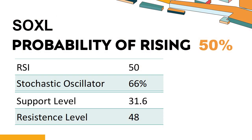What technical factors should you consider when analyzing SOXL? SOXL's 14-Day Relative Strength Index (RSI) value was 50. When the RSI is above 25 and below 50, it generally indicates that the stock is moderately bearish. This means that the security's price has been falling but has not yet reached oversold levels, typically considered an RSI reading of 25 or lower.